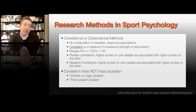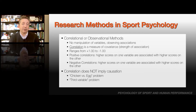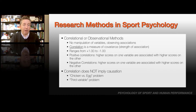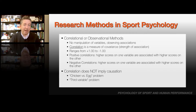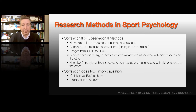There's also the third variable problem. If you see two things that co-vary together, it could be that one is causing the other to change. Or it could be that there's a third variable — unmeasured or unknown — that's actually causing them both to move together. If it weren't for that third variable, these two variables wouldn't have any association at all. The third variable problem is always present when talking about correlational studies.